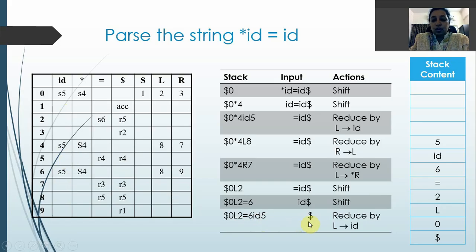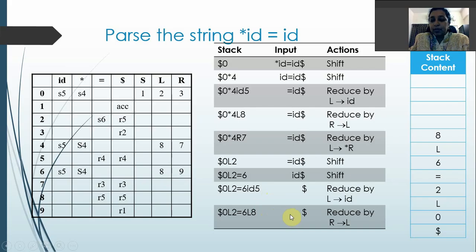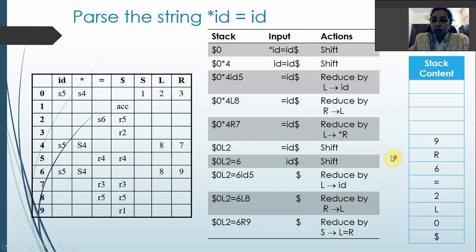Now it is state 5 on dollar. State 5 on dollar means reduce by the 4th production: L → id. We pop until id is removed and replace it with L. Then state 6 on L gives goto state 8, so we push L and state 8. Next, state 8 on dollar means reduce by the 5th production: R → L. So L is replaced by R, and state 6 on R gives goto state 9. We push R and state 9.